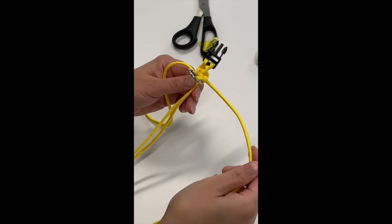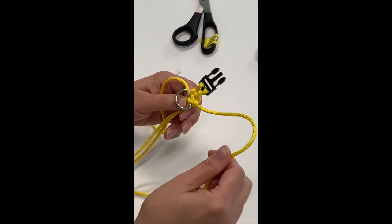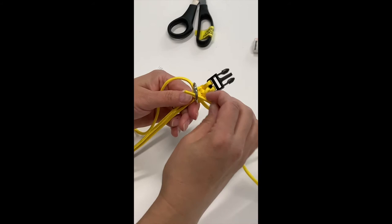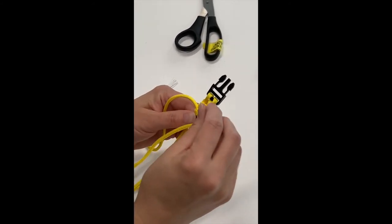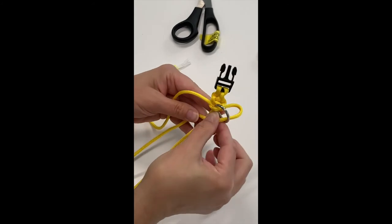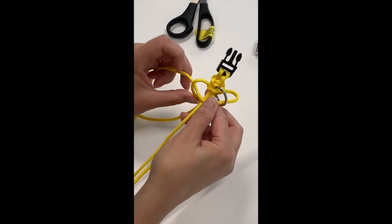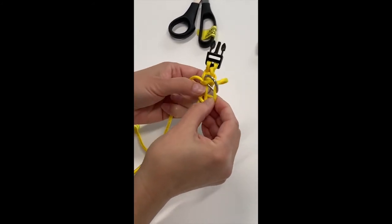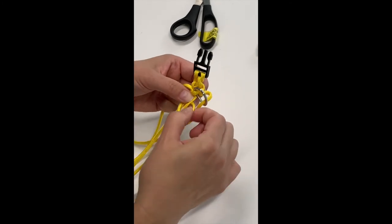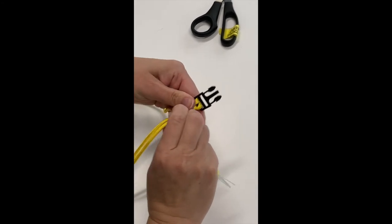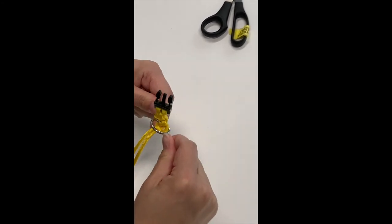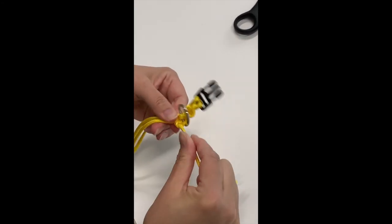You're going to do the same thing on your other side. Pull it through the D-ring, make your loop, bring that around again and underneath. And that will hold your D-ring in place. Make sure you pull it tightly so it holds in place.